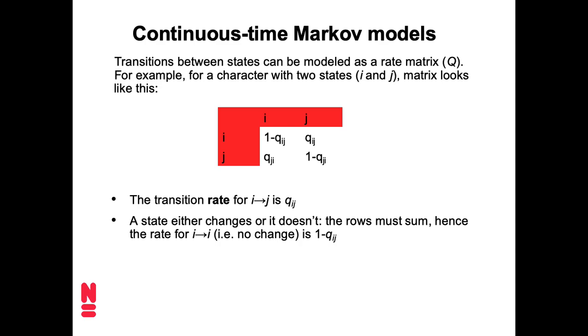But we can have other types of data with other numbers of states. And the simplest example of that is shown here. So now we have a character that has just two states, I and J. And so then we can explicitly say, OK, how do we think